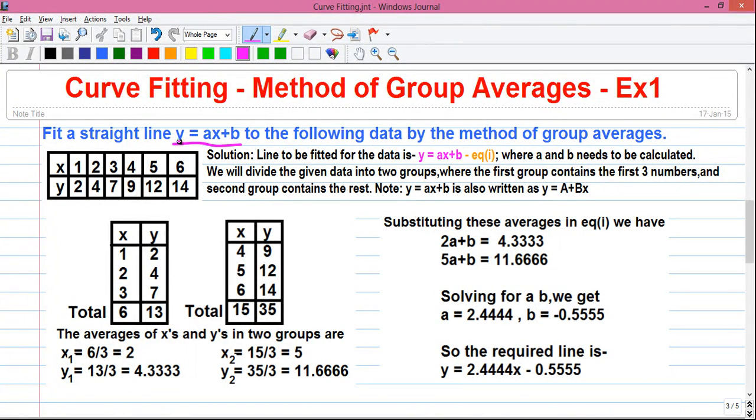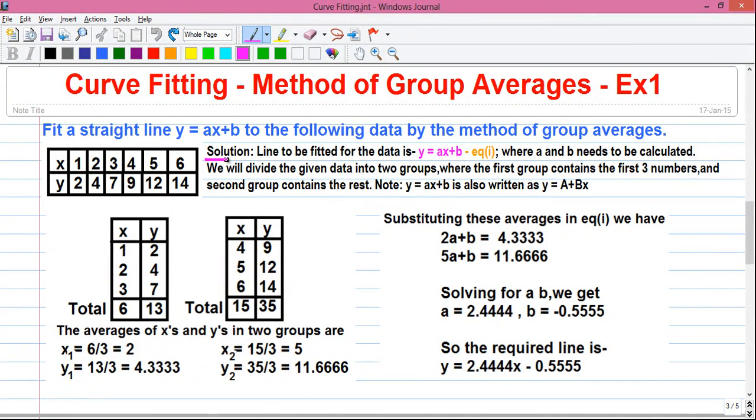So our question is to fit a straight line in the form of y equals ax plus b for the given data by the method of group averages. So let's proceed to the solution. Line to be fitted for the data is y equals ax plus b which is given in the question, and which is our equation number 1, where a and b are the constants need to be calculated. So we will divide the given data in two groups. As the name suggests, we will divide the data in two groups, group a and group b, and we will find out the averages of them.